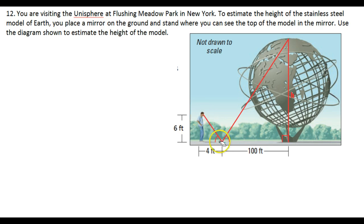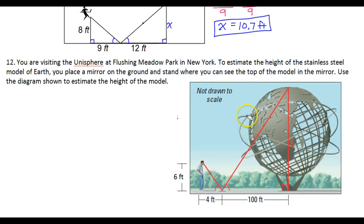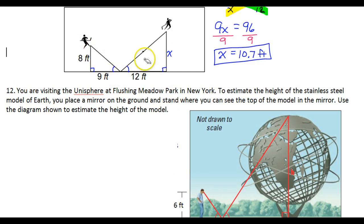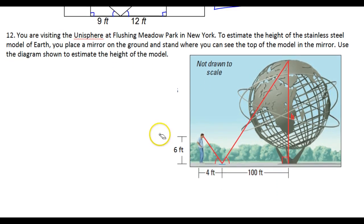Then that creates a pair of similar triangles as shown. Your body creates a similar triangle with the mirror, and then the tall shape creates another similar triangle with the mirror. And sort of like the hockey puck, these two angles are always going to be congruent. The angle of incidence is the same as the angle of reflection. So we're given these measurements, the height of the person, distance from the mirror, and again distance from the mirror, and now we're looking for the height. So it's pretty much just like the hockey problem.